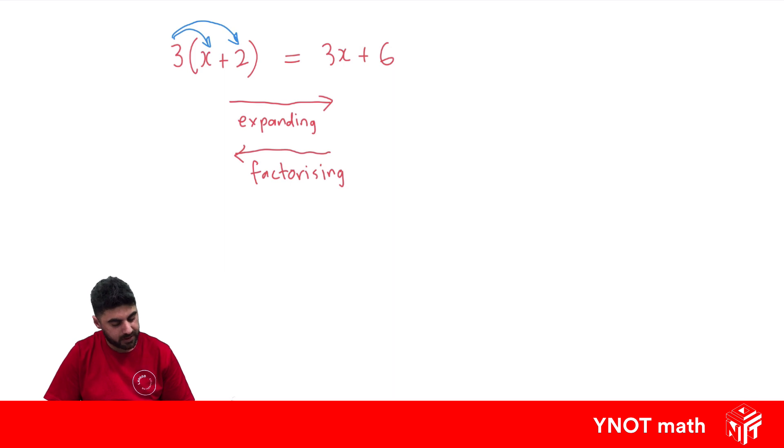Well, let's look at that example, 3x plus 6. How do we get it back into factorized form? It's all about looking at the highest common factor in all the terms. So we've got two terms here, 3x and a positive 6.